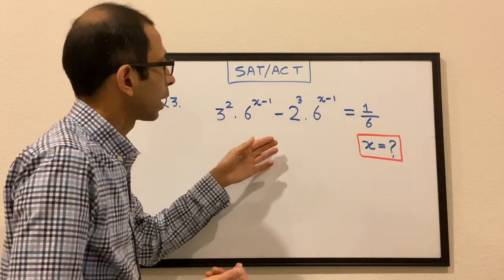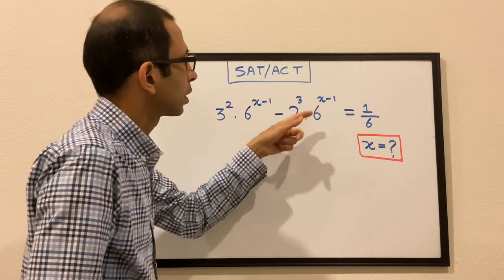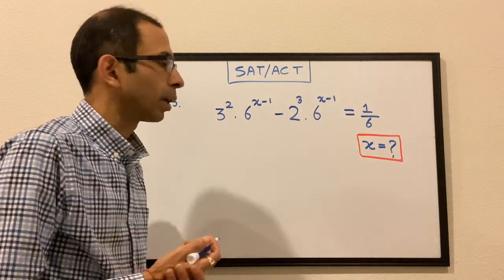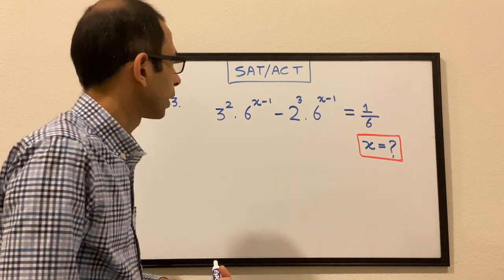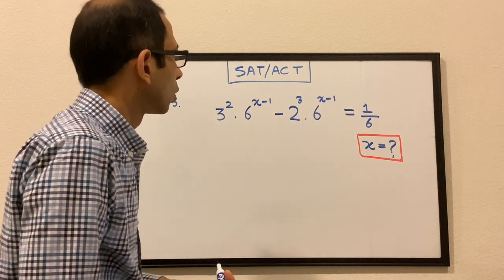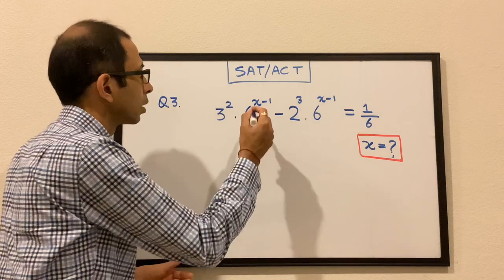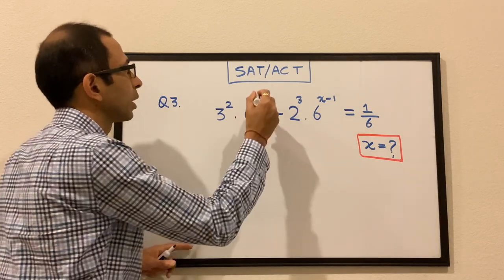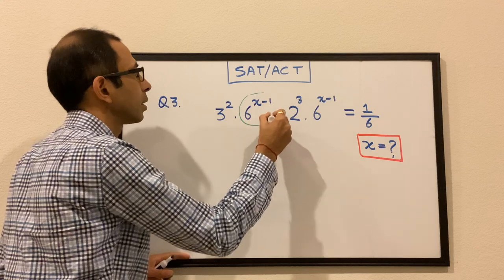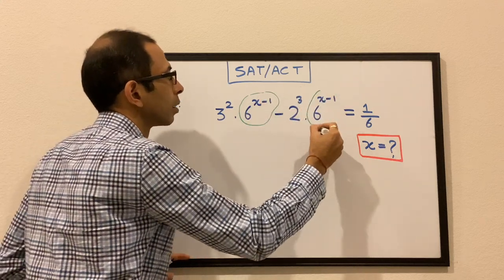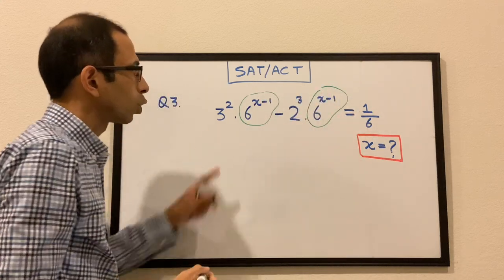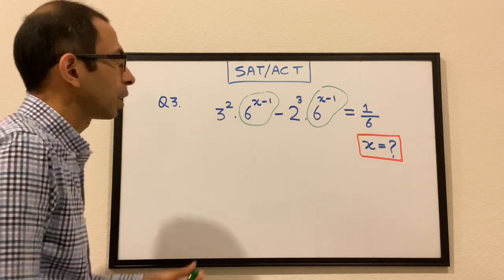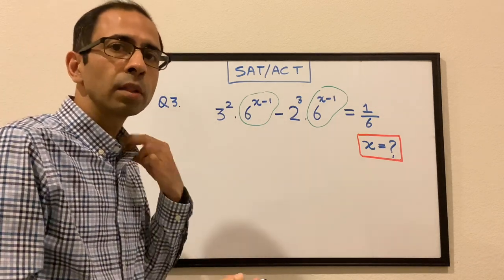Question 3: 3² × 6^(x−1) − 2³ × 6^(x−1) = 1/6, and we have to find the value of x. The first thing we notice is that 6^(x−1) is common in both terms, so we can factor it out.